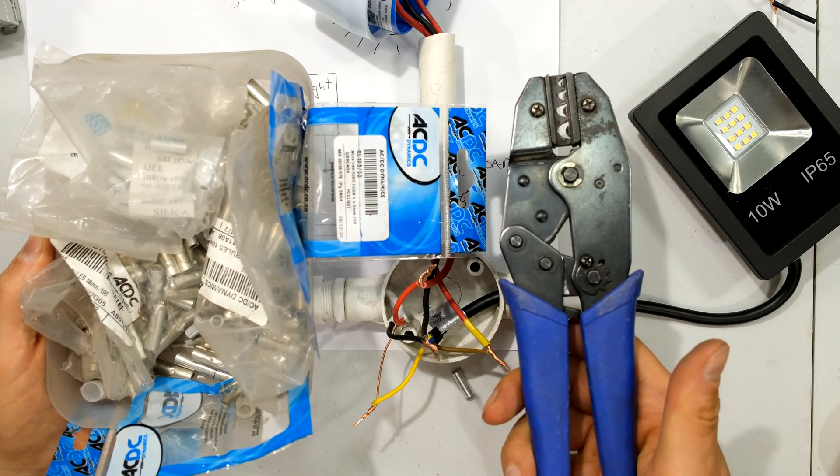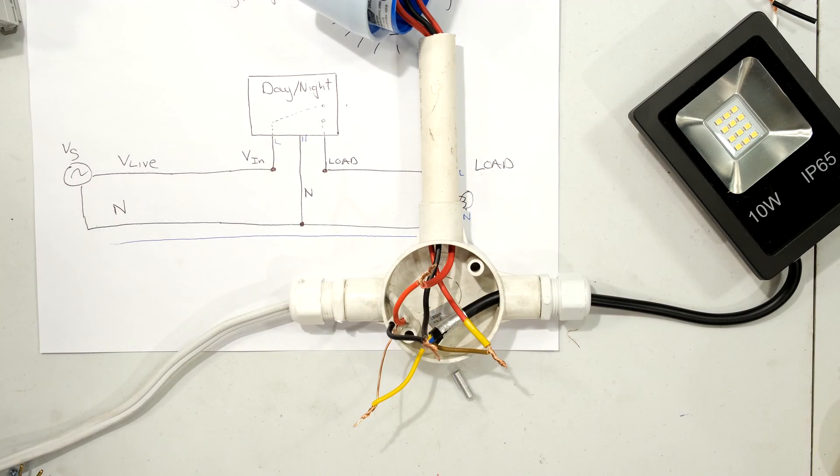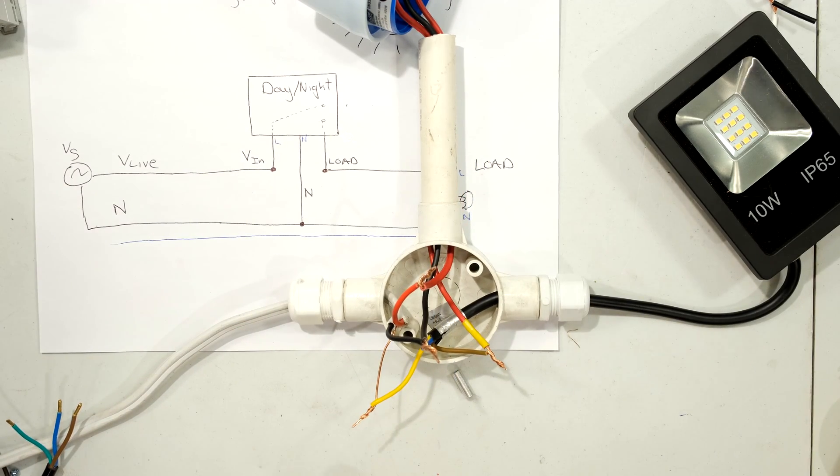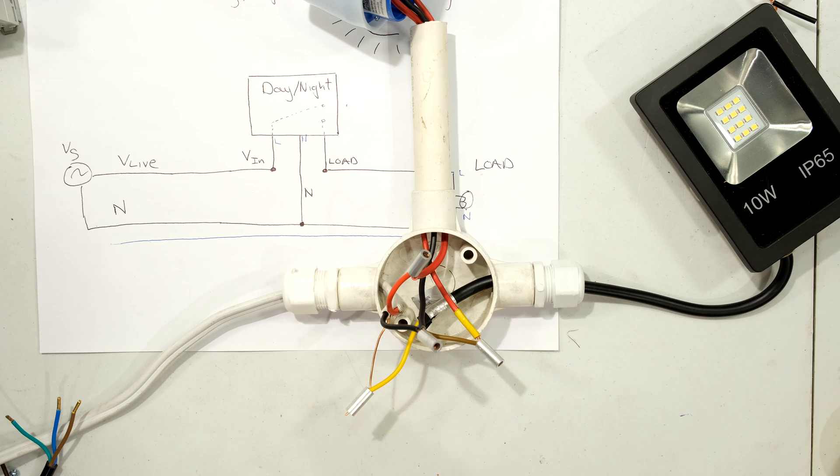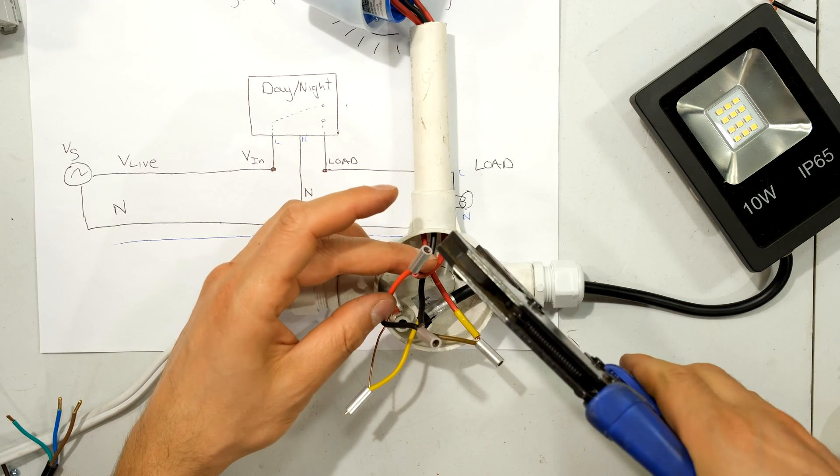Preferably, you can use ferrules and then a crimper to crimp it. This is a better option. So in this case, I will use the ferrules and then what I would need to do is crimp each one.